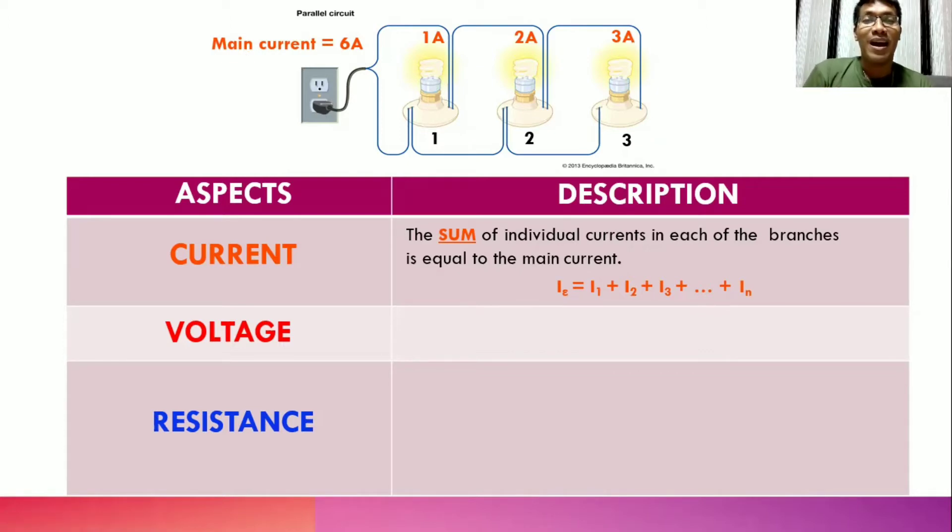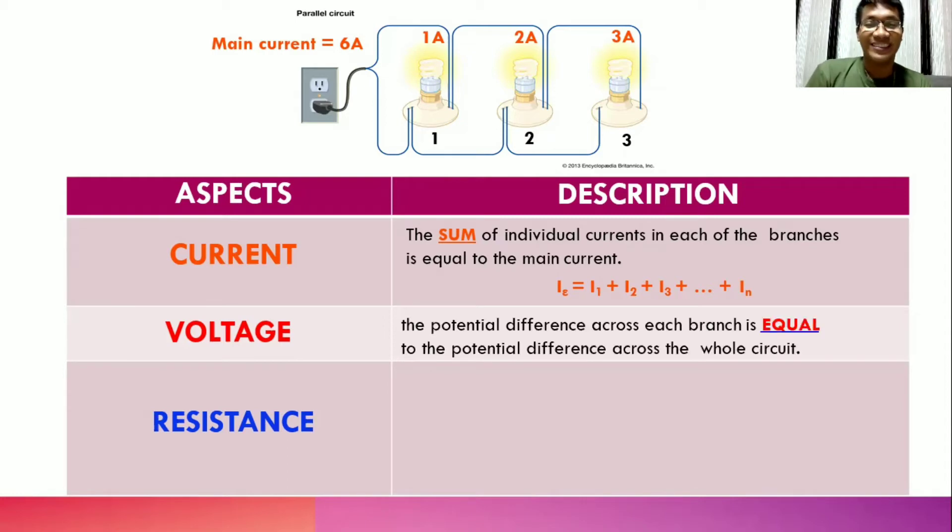This time, let us proceed to the voltage. The potential difference across each branch is equal to the potential difference across the whole circuit. If we assume that the socket has 240 volts, then the voltage running through bulb 1 is 240 volts as well. How about in bulb 2? You got it right, 240. And lastly, for bulb 3, the same. Always remember that the voltage in a parallel circuit is always equal to its components.